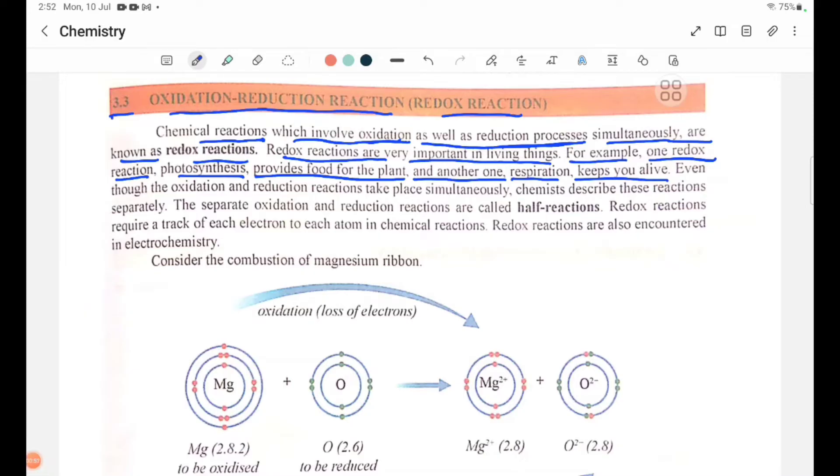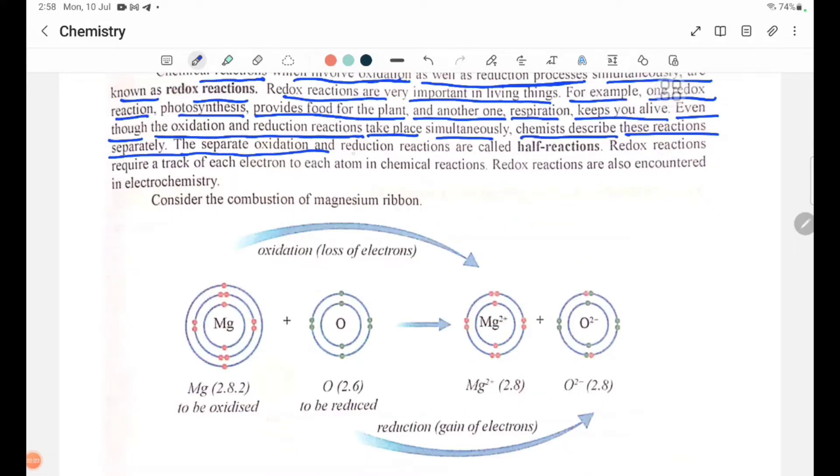Photosynthesis and respiration are redox reactions. Even though oxidation and reduction reactions take place simultaneously, the separate oxidation and reduction reactions are called half-reactions.